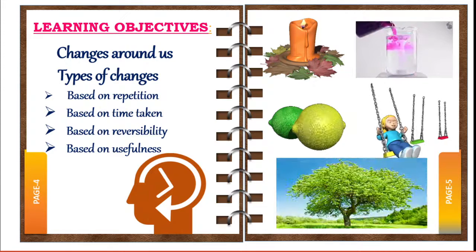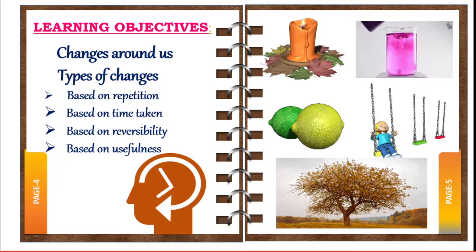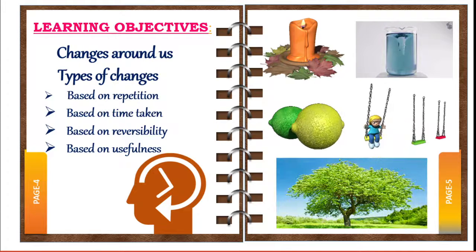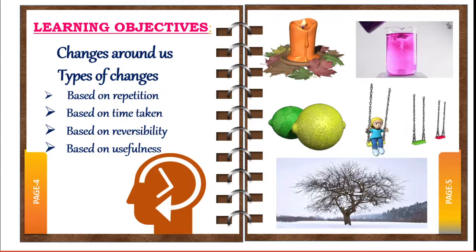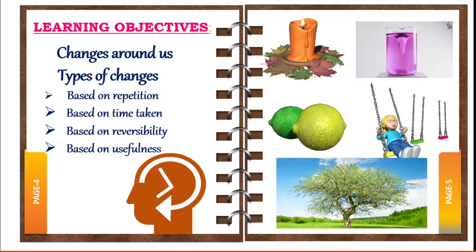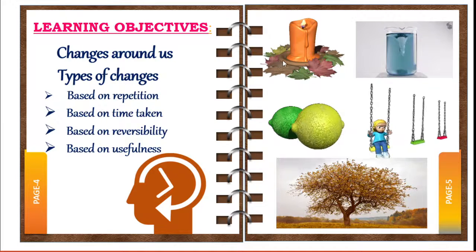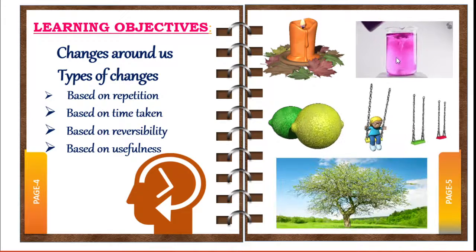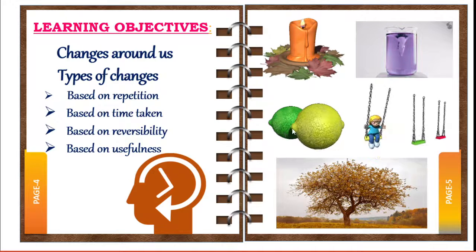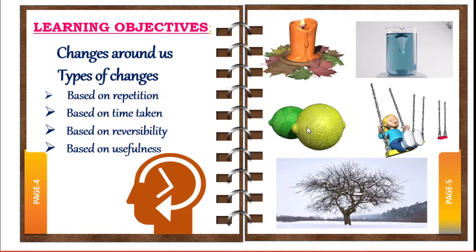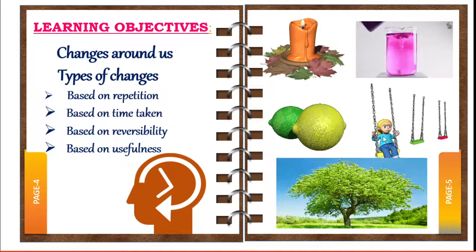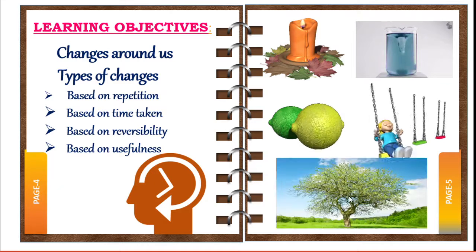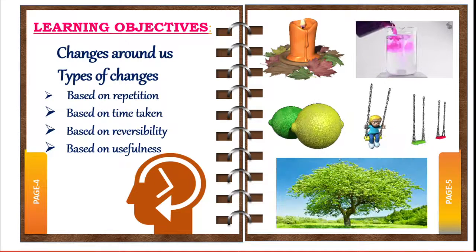Changes take place all around us. Some of the changes observed by us in everyday life are burning of a candle, dissolving potassium permanganate, ripening of fruits, oscillation of a swing, and changes in trees.